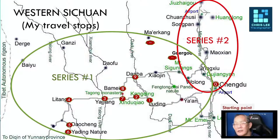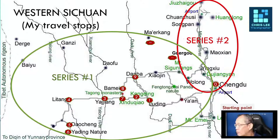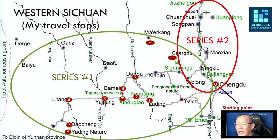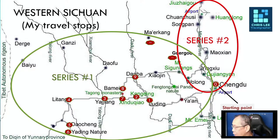I have visited Sichuan on many occasions — not less than three times over the last eight years. In today's travel routes, I intend to break it into two series. Series 1 will focus on western Sichuan. The areas marked in red are cities or towns we will pass through. Stay tuned for the entire five episodes as I share this journey.